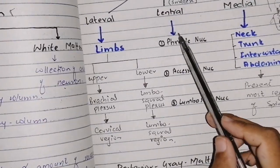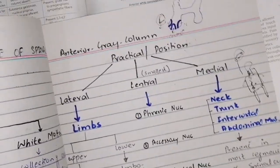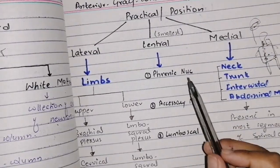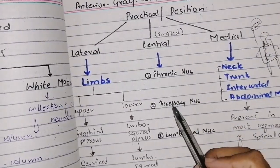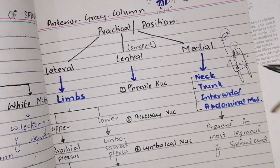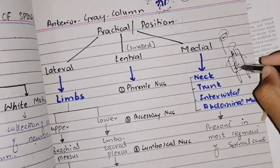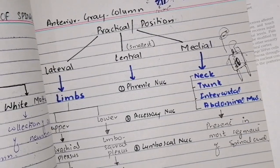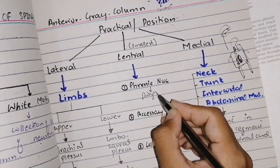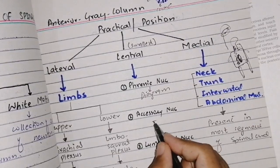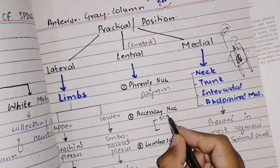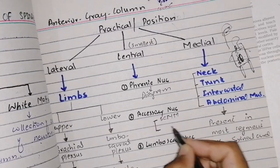The third group is the central group. You have to remember that the central group contains three nuclei: the phrenic nucleus, the accessory nucleus, and the lumbosacral nucleus. The phrenic nucleus supplies the diaphragm. The accessory nucleus supplies two muscles: the sternocleidomastoid and the trapezius.